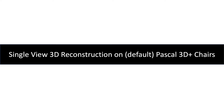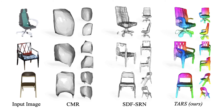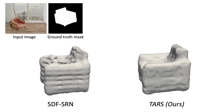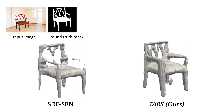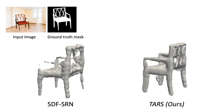Now let's review the results on the Pascal 3D Chairs dataset. Unlike mesh-based approaches which completely fail on the topologically challenging chairs category, implicit approaches can better model the geometry of the chairs. In comparison to SDF-SRN, we additionally learn correspondences without any direct supervision. Thanks to the learned deformation field, our reconstructed shapes are much cleaner and have fewer artifacts.